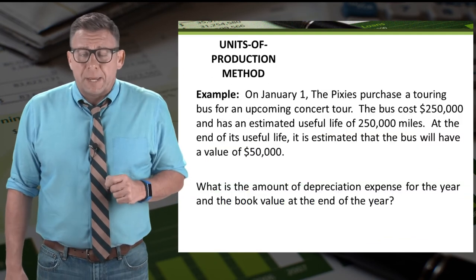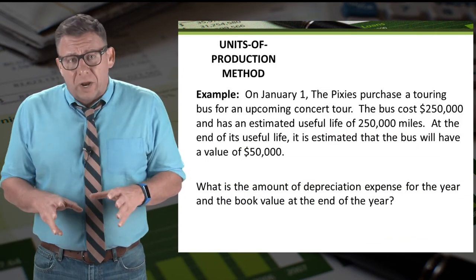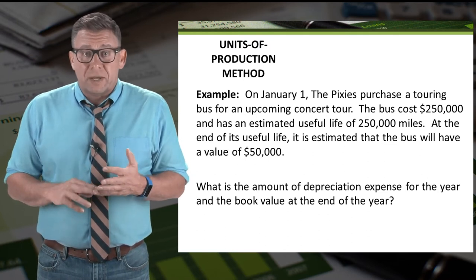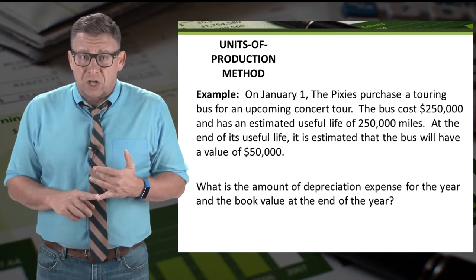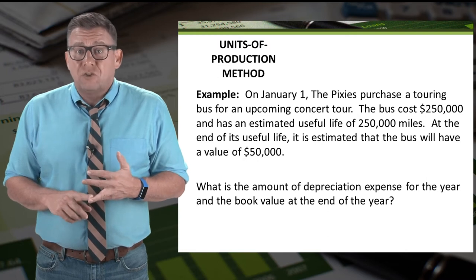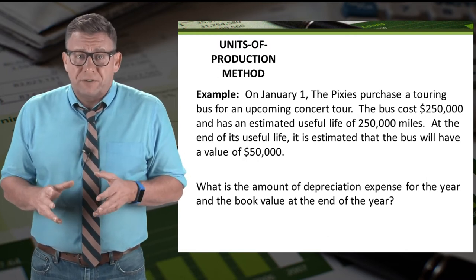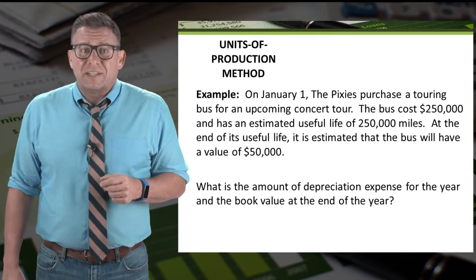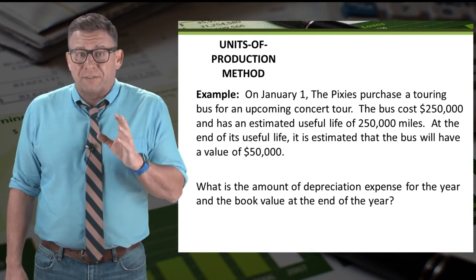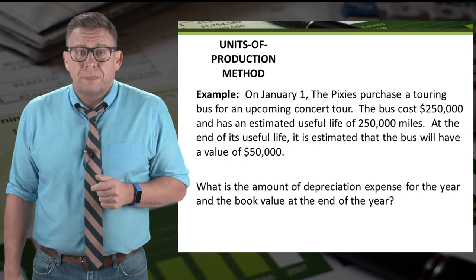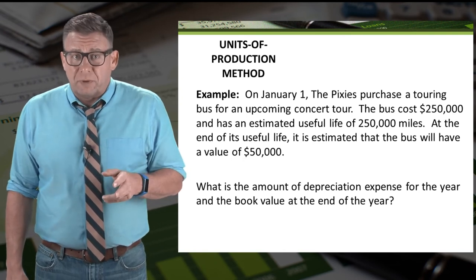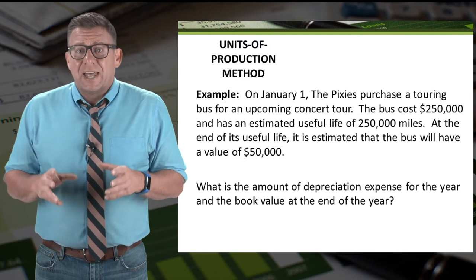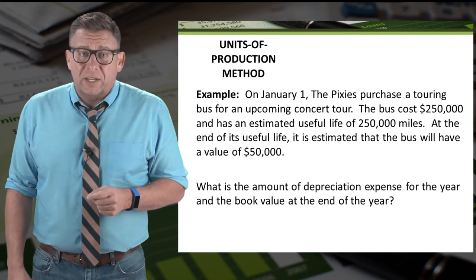Let's look at an example. On January 1, the Pixies purchase a touring bus for an upcoming concert tour. The bus costs $250,000 and has an estimated useful life of 250,000 miles. At the end of its useful life, it is estimated that the bus will have a value of $50,000. Using the units of production method, let's calculate the amount of depreciation expense and asset book value at year end.